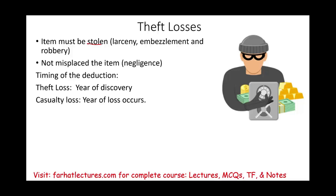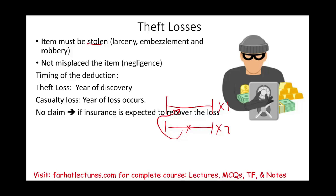For a casualty loss, the deduction is taken in the year the loss occurs. You should not file a loss if you think you're going to get the money back from insurance. If insurance is expected to recover the loss, don't claim it. And if you do claim it and then receive the money, you have to apply the tax benefit rule. If insurance does not fully recover you, then whatever's left you can claim.